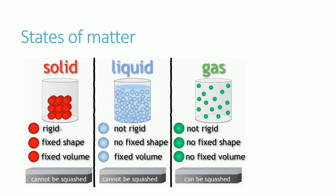Solids are quite rigid due to their tightly packed structure. Liquids are less rigid, and gases are not rigid at all. Solids have a fixed shape, whereas liquids take the form of their container — just like pouring water into a bottle, the shape depends entirely on the container. Gases also have no fixed shape.